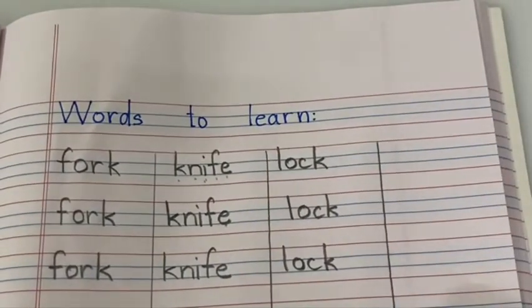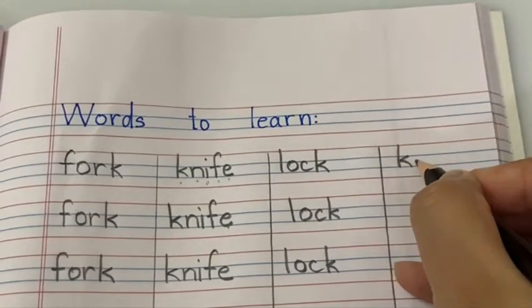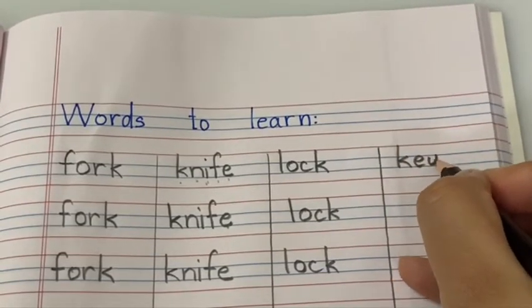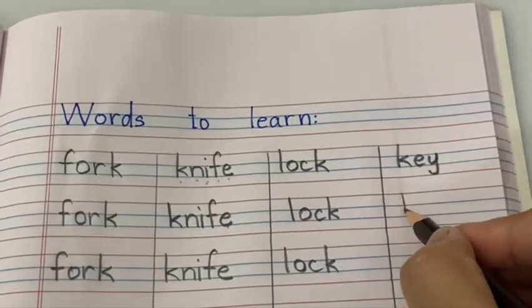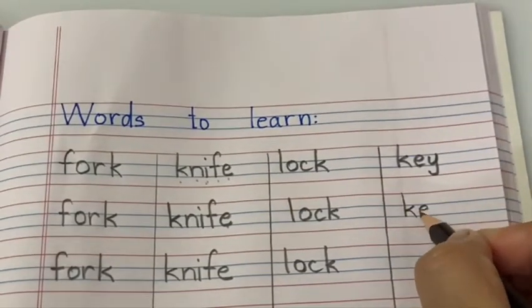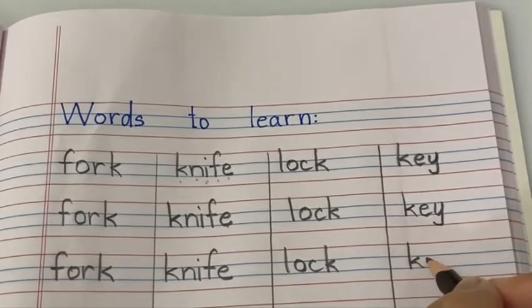Last word is key. K-E-Y, children. E-E-Y, long sound of E. Right. Yes. K says K, E-Y together, E. Key. K-E-Y. Key.